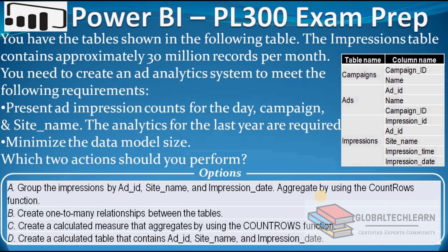Now let's look at the options. The first option is to group the impressions by ad ID, site name, and impression date, and aggregate using the count rows function. If we group the impressions table by ad ID, site name, and impression date, it will definitely reduce the data size in the impressions table. This way we would be able to minimize the model size.